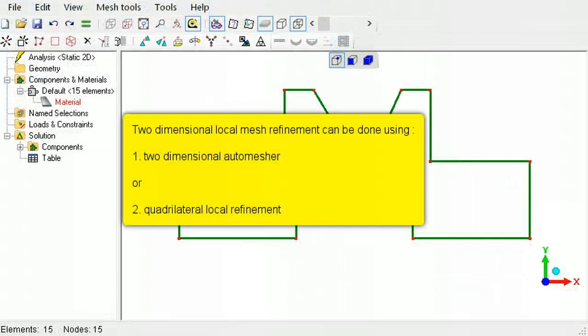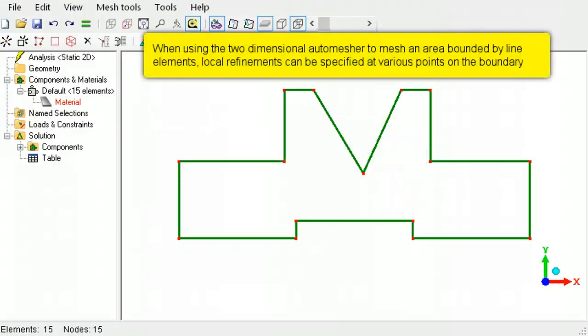For two-dimensional meshes, there are two ways to do a local mesh refinement. The first method uses the two-dimensional auto mesher to locally refine nodes on a boundary formed by line elements.